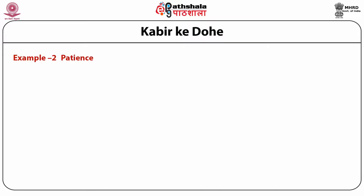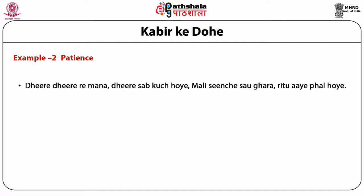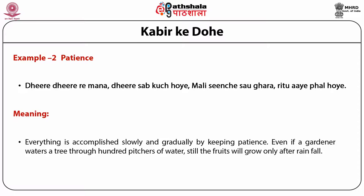Example 2 of Kabir Doha relates to patience: 'Dheere dheere re mana, dheere sab kuch hoi. Mali seenche sau ghara, ritu aaye phal hoi.' Which means everything is accomplished slowly and gradually by keeping patience. Even if a gardener waters a tree with a hundred pitches of water, the fruits will grow only after rainfall. Kabir, using the metaphors of fruit and rain, explains that human beings are always in a hurry to acquire more in less time, and due to this nature of wishing for quick victory, we invite ill health, stress and frustration. Therefore, it is vital to have patience and continue with one's work as results will appear in due course.